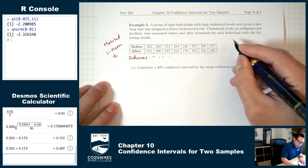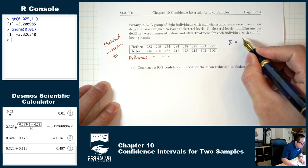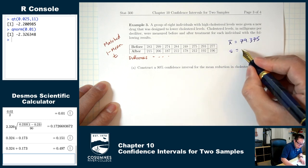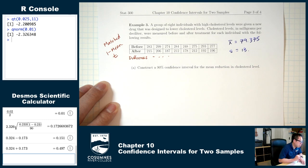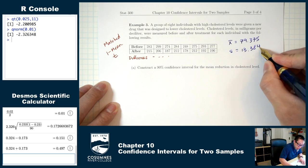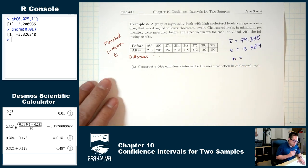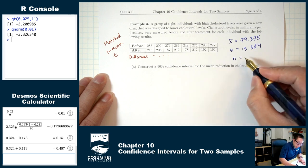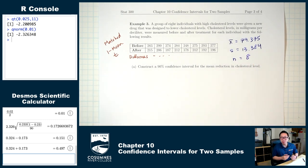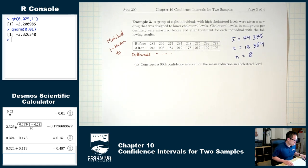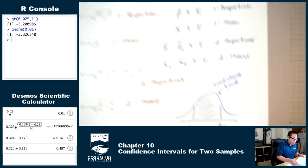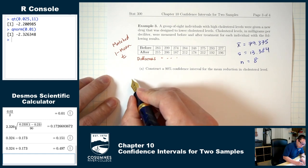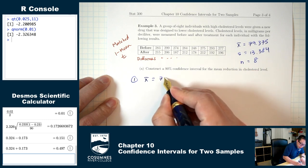The mean we found was 79.375. The standard deviation was 13.384 (rounded to three decimal places). The sample size is just the number of differences — there are 8 individuals, so n equals 8.